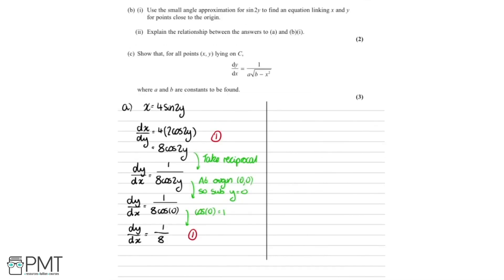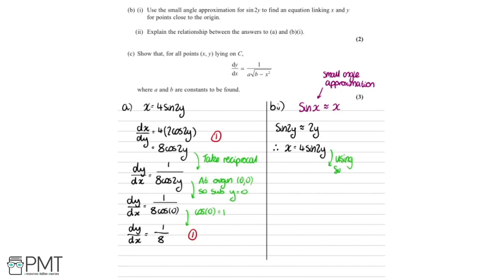Part B1 says: use the small angle approximation for sine 2y to find an equation linking x and y for points close to the origin. The small angle approximation states that sine x is approximately equal to x for small values of x. It follows that sine 2y for small values of y is approximately 2y. So using x equals 4 sine 2y with sine 2y approximately equal to 2y, we get x is approximately equal to 4 times 2y, so x is approximately equal to 8y.